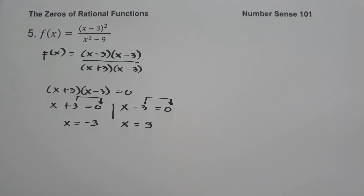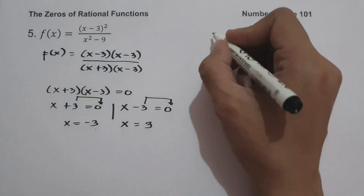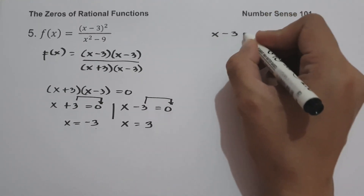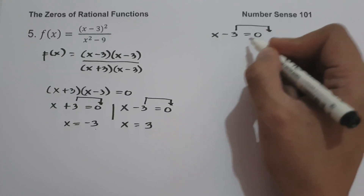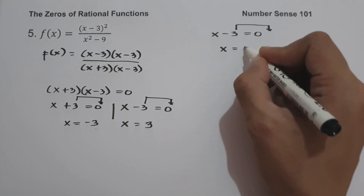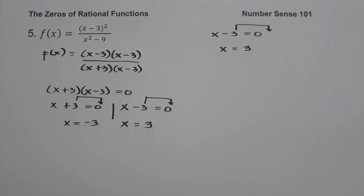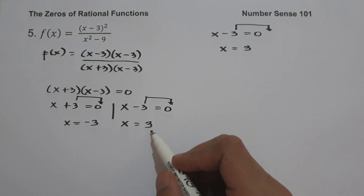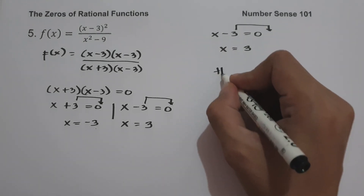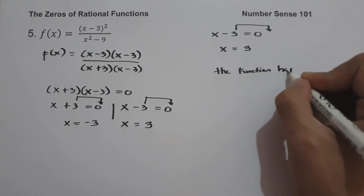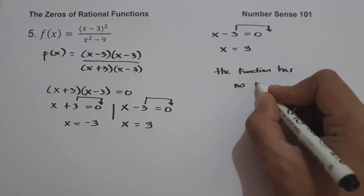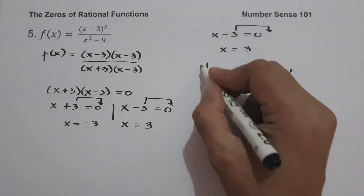Next, we set the numerator equal to 0. Since we have x minus 3 times x minus 3, setting x minus 3 equal to 0 gives x equals 3. Since 3 is a restricted value, therefore the function has no zero. And this will be our answer.